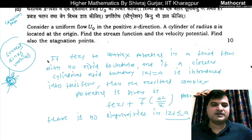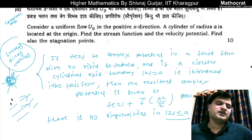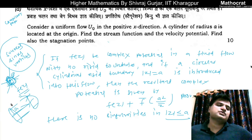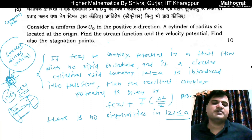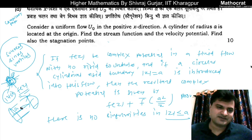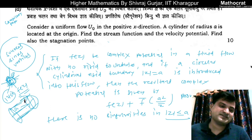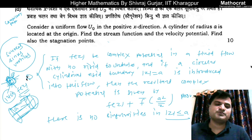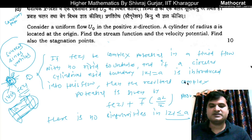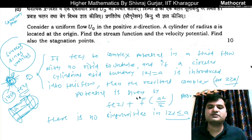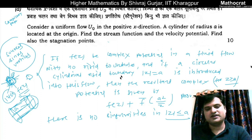So this is the concept: consider some fluid flow with complex potential F(z), and a circular cylinder of radius A. Modulus z less than or equal to A has no singularity — there is no sink, source, or vortex inside. Modulus z equals A is the rigid boundary. Outside this, the complex potential is F(z) plus F-bar(a² / z̄). This is the resultant complex potential for modulus z greater than or equal to A — outside the cylinder.